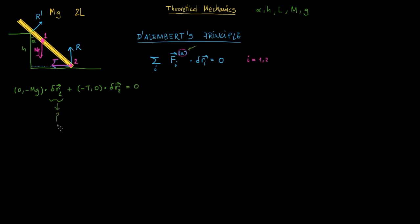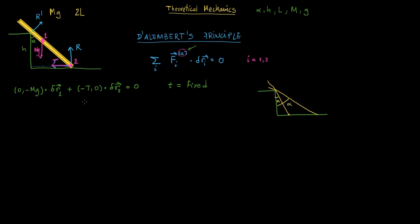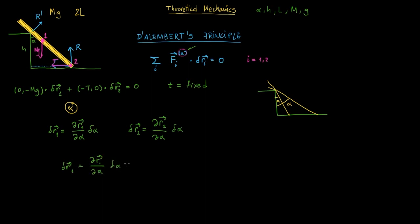What is the definition of these virtual displacements? In order to calculate these variations, you must fix time T. The only thing you can do is set possible configurations compatible with the geometry of the system. In this case, it corresponds to different values of alpha, because the only difference between configurations is this angle. So the parameter that rules the game is alpha. The virtual displacement is just the partial derivative of R1 with respect to alpha times the variation of alpha. If you had two parameters alpha and beta, you would include both partial derivatives, but here we have only one parameter, alpha.